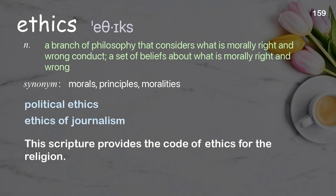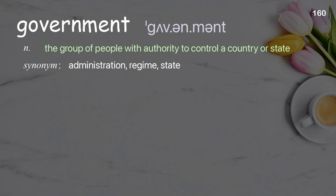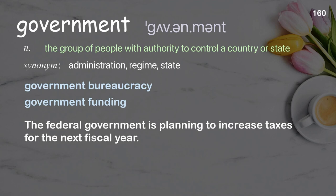Government: the group of people with authority to control a country or state. Examples: government bureaucracy, government funding. The federal government is planning to increase taxes for the next fiscal year.